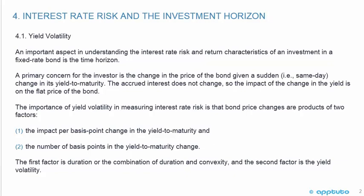The importance of yield volatility in measuring interest rate risk is that bond price changes are products of two factors: one, the impact per basis point change in the yield to maturity, and two, the number of basis points in the yield to maturity change. The first factor is duration, or the combination of duration and convexity, and the second factor is the yield volatility.